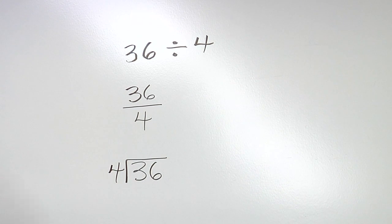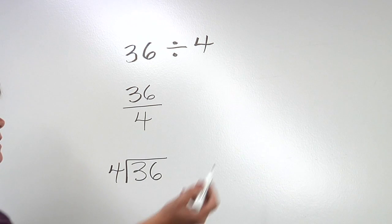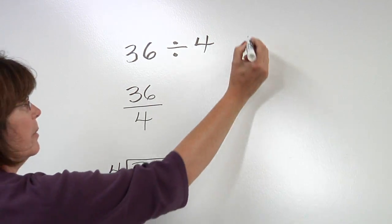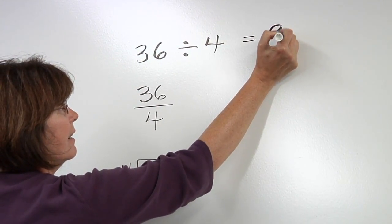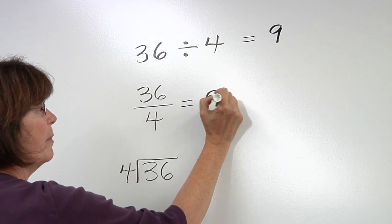In any case, we're talking about 36 as the total amount, and we want to divide it into groups so that there are 4 in each group. We want to know how many times we can get 4 out of 36. So the answer to this problem is 9 in any of these formats.